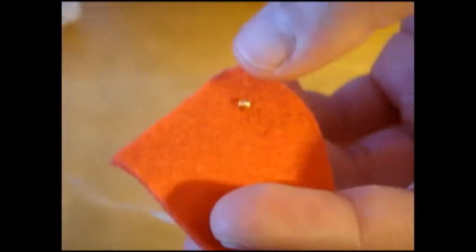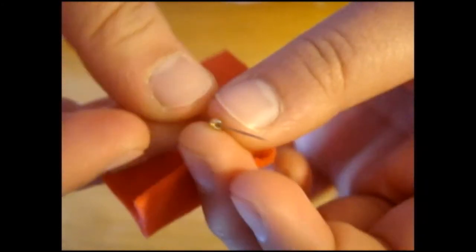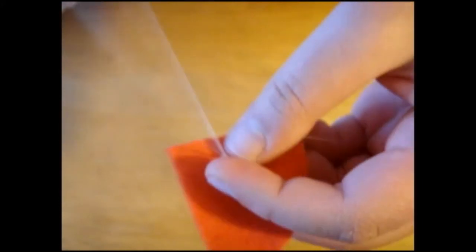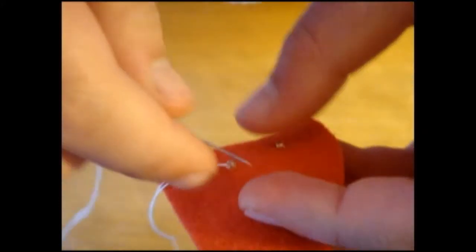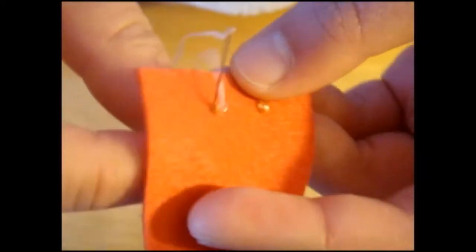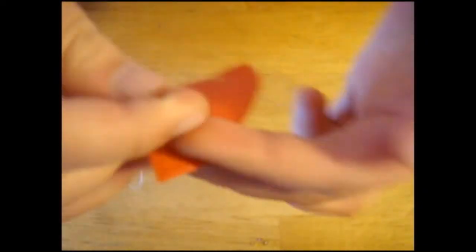Now we're going to sew little beads onto the red quadrant. I'm using seed beads, or some of you may call it micro marbles. And basically, you just go and sew it on like so. This creates the seed effect that you can find on strawberries. I sewed about six beads on.